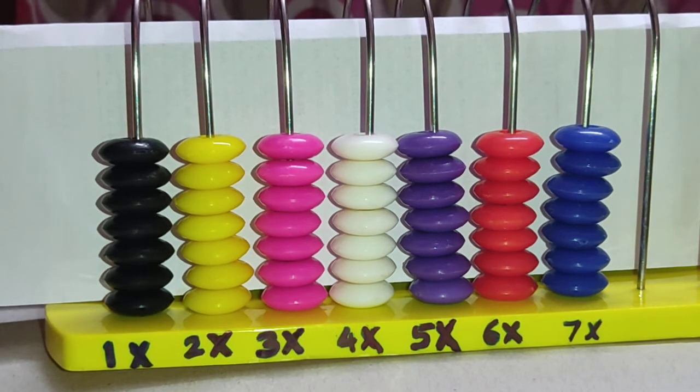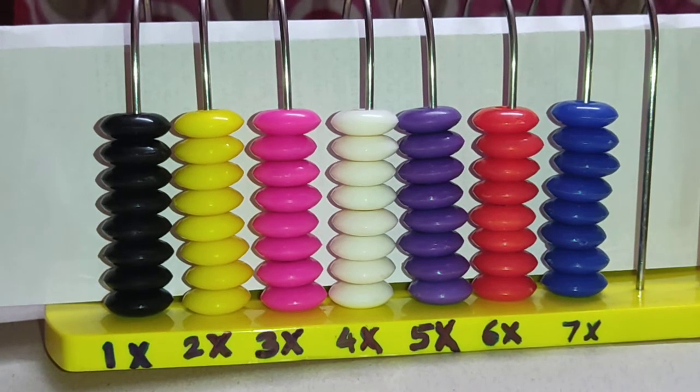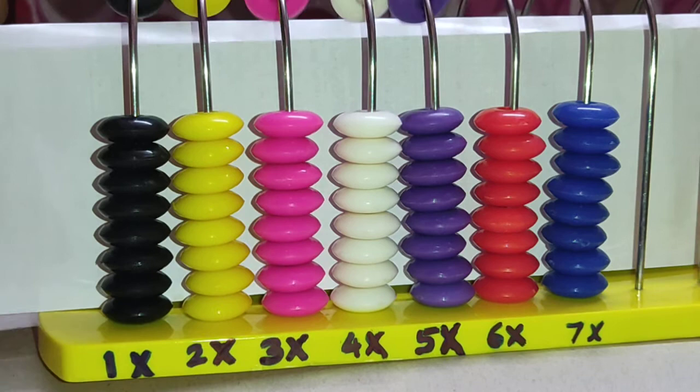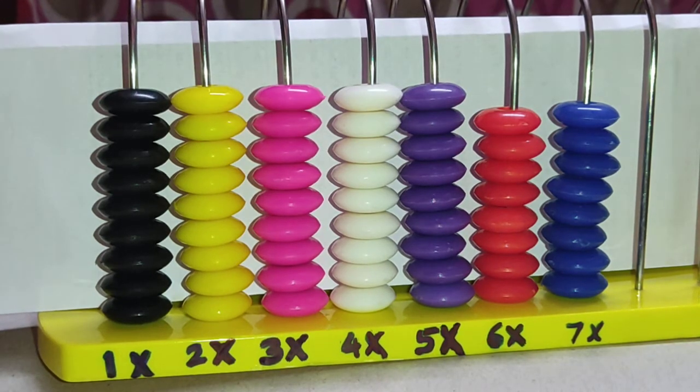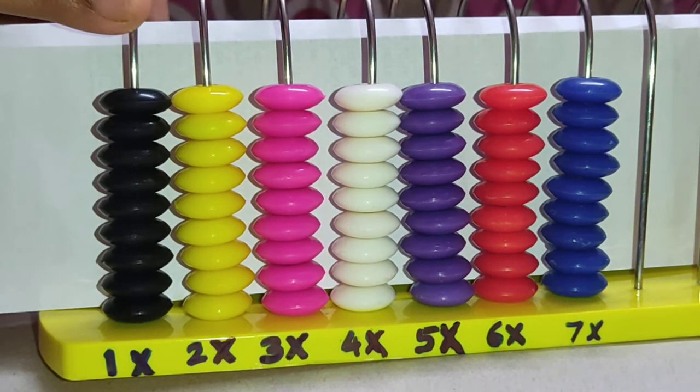7 times 8 is equal to 56. 7 times 9 is equal to 63.